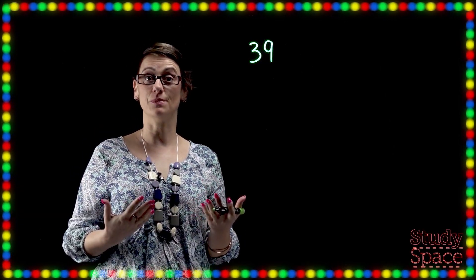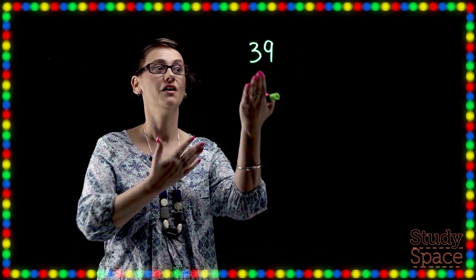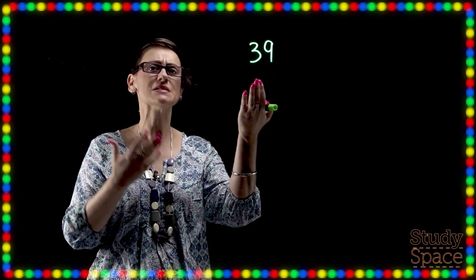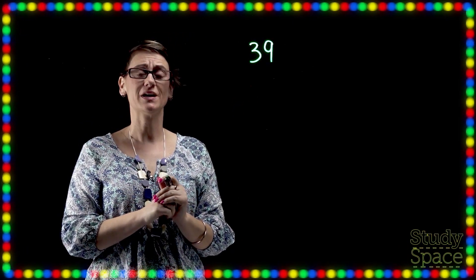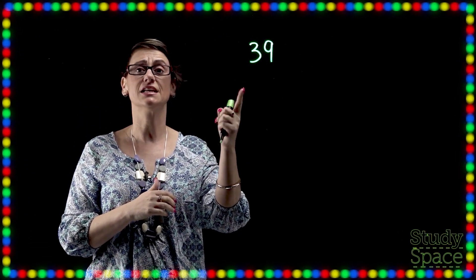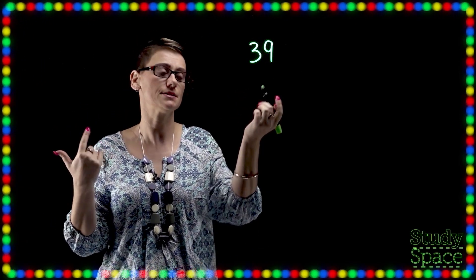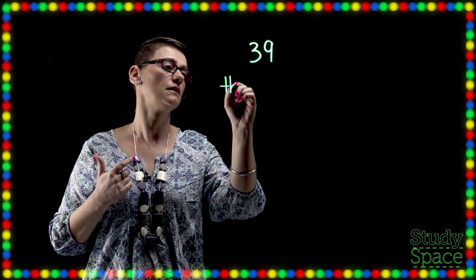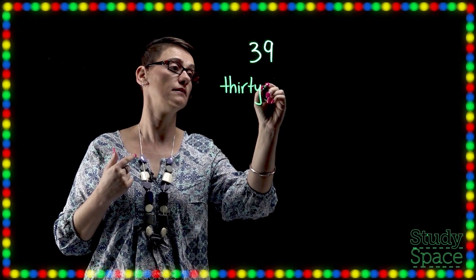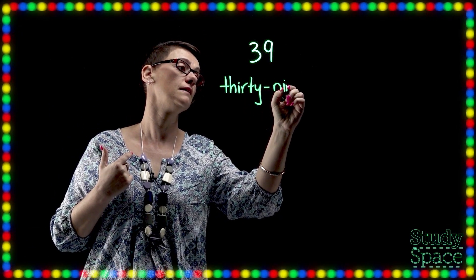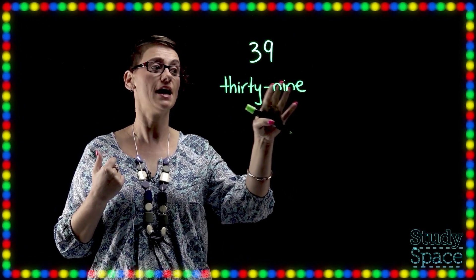So let's have a look at our first number, boys and girls. What's my number? How do we say it? 39. That's right. So now what we're going to do is look at it written in words. What does 39 look like written in words? Thirty-nine. So 39 written as words.